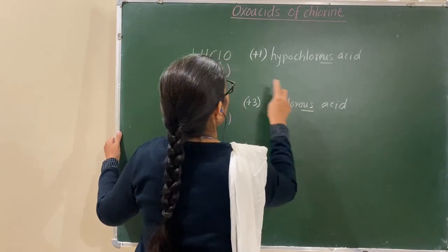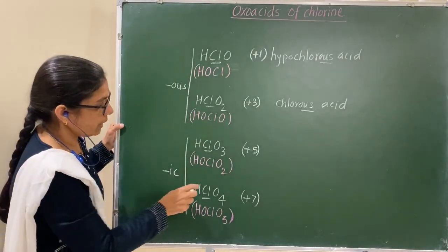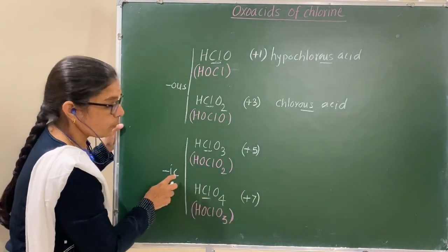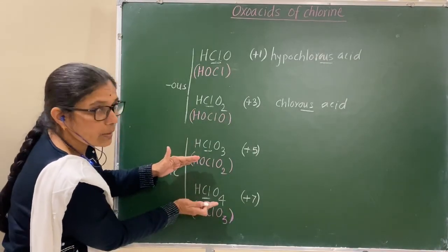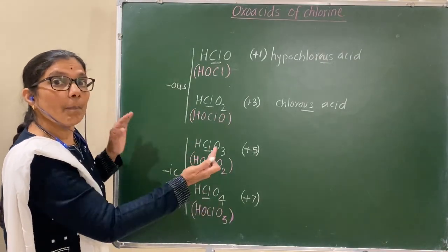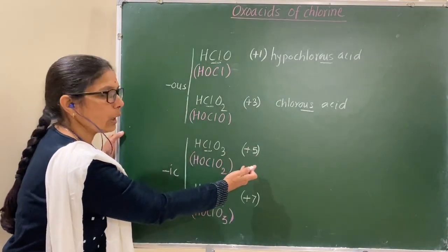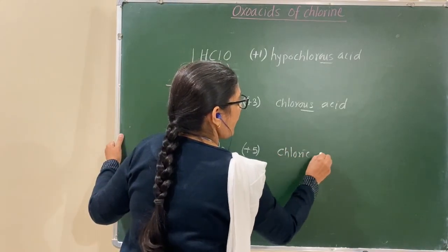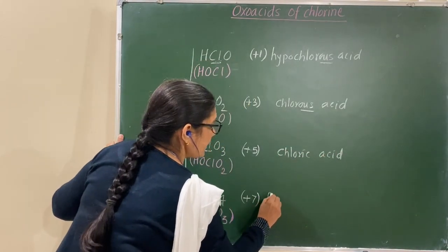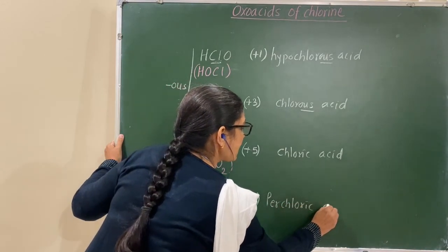Now, both are 'ic' with the higher oxidation number. Here, higher oxidation number with 'ic', chloric. In that, the highest one is 'ic'. Therefore, it is perchloric, and this is only chloric. Therefore, it is chloric acid, while it is perchloric acid.